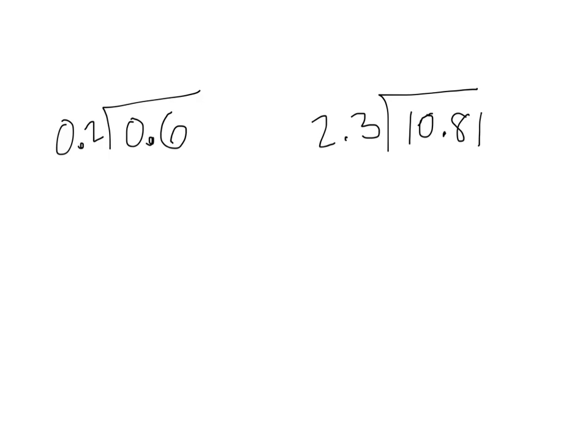In this first problem, 0.6 divided by 0.2, we want the 0.2 to become a whole number, so we move the decimal once. And in our dividend, we move the decimal once. And for our answer, the decimal goes straight up.